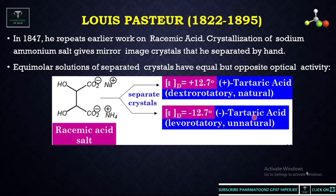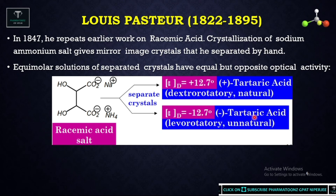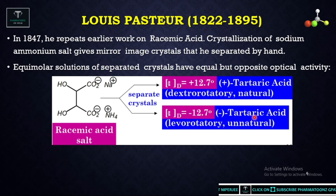Racemic acid contains 50% dextrorotatory compound and 50% levorotatory compound, so the net rotation of light is zero. Hence it is called an optically inactive compound — racemic acids are generally optically inactive.